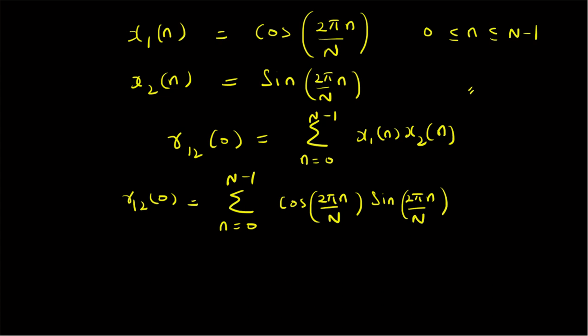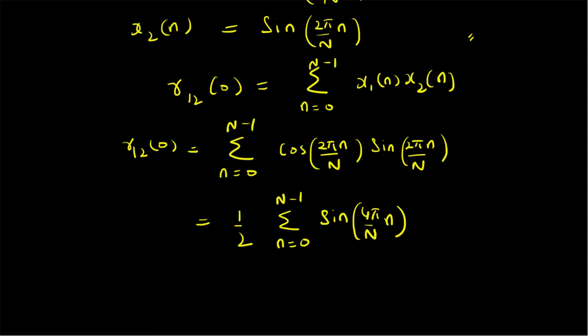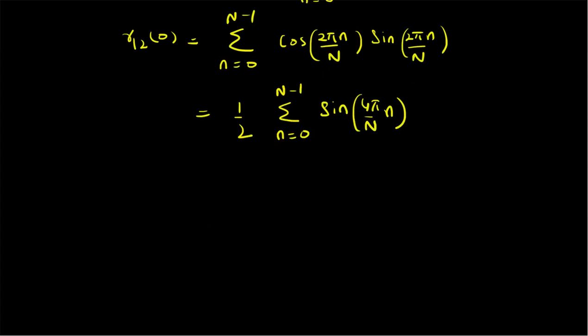Now, since we have the identity sin(2θ) = 2·sin(θ)·cos(θ), using that trigonometric identity, we can rewrite this as (1/2) times the summation from n equal to 0 to N minus 1 of sin(4πn/N). That is the transformation from a product of cos(θ) and sin(θ) to sin(2θ), and obviously this sum can be shown to be 0.